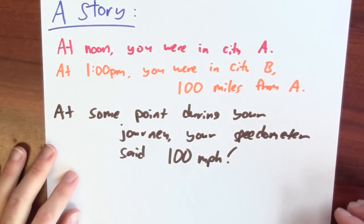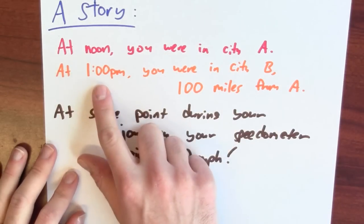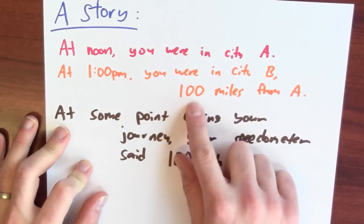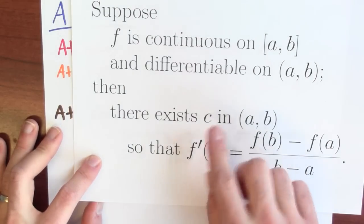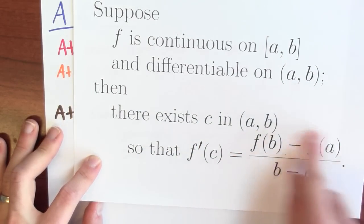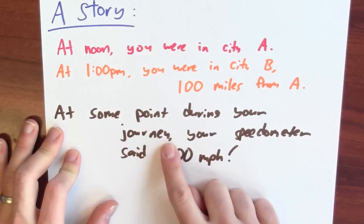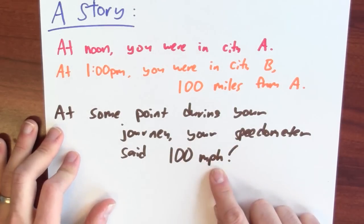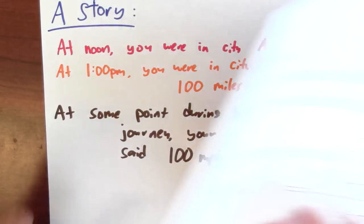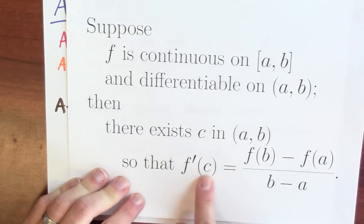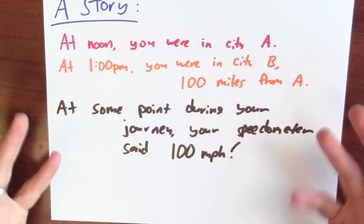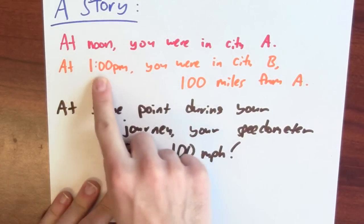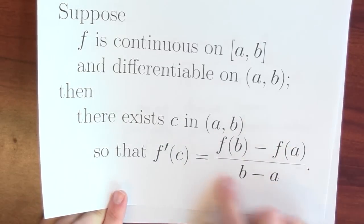The mean value theorem is often told as a story about somebody driving a car. At noon, you're in some city a. At 1 p.m., you've arrived in city b, which is 100 miles away from city a. What does the mean value theorem say? It tells you that at some point during your journey, the derivative equals the slope of the secant line — meaning your speedometer said 100 miles per hour. Your speedometer reports your instantaneous speed, which is the derivative of your position with respect to time. At some point it's 100 miles per hour because your average speed was 100 miles per hour: in one hour, you traveled 100 miles. That's exactly what this difference quotient is calculating.